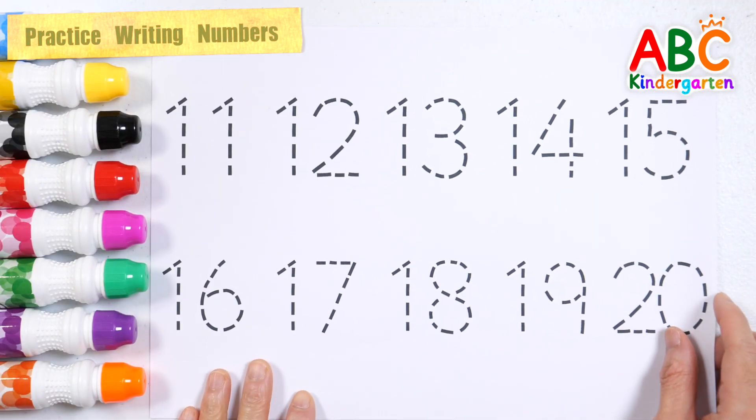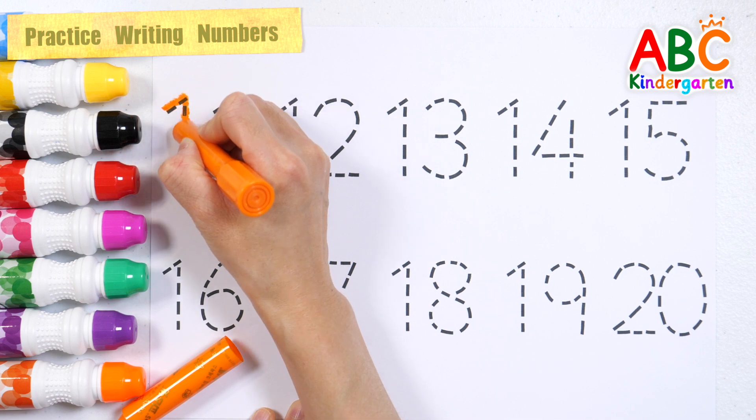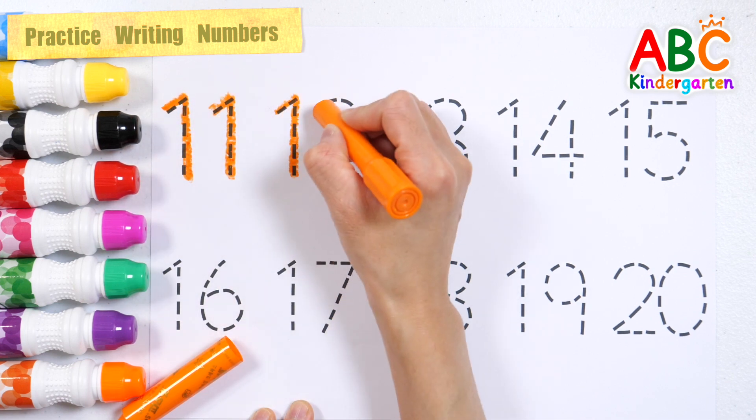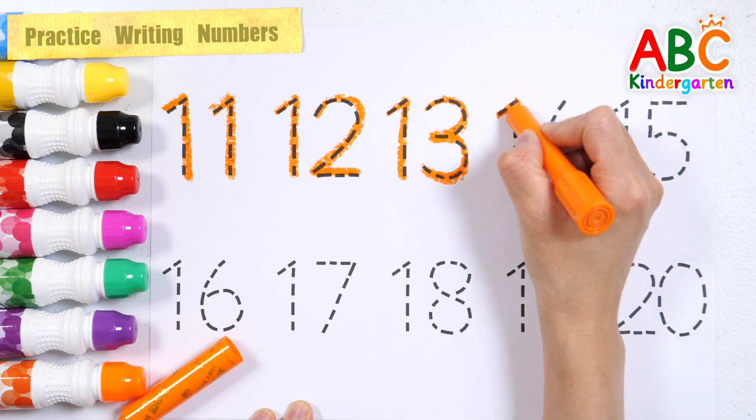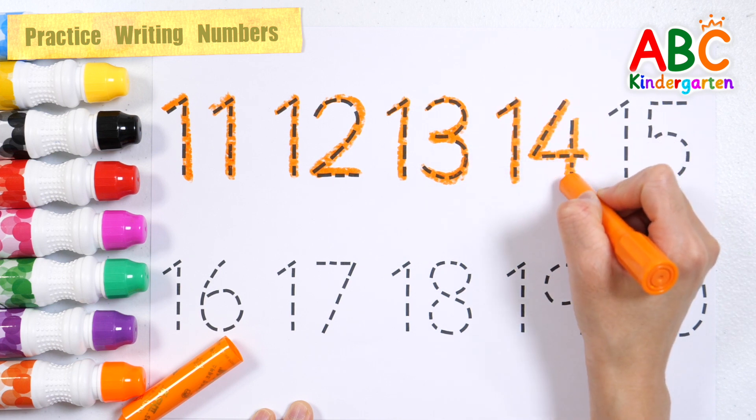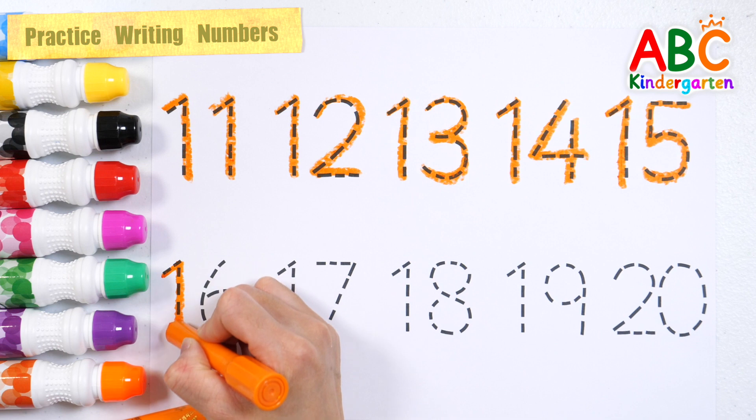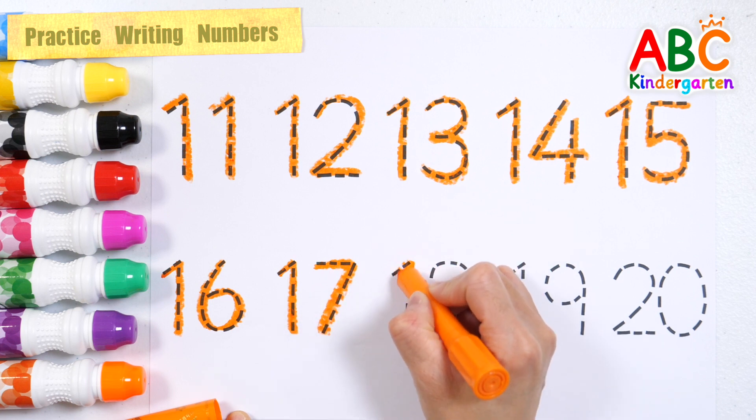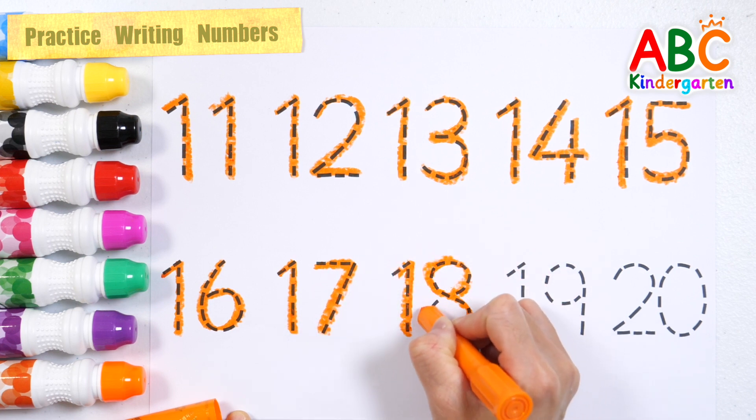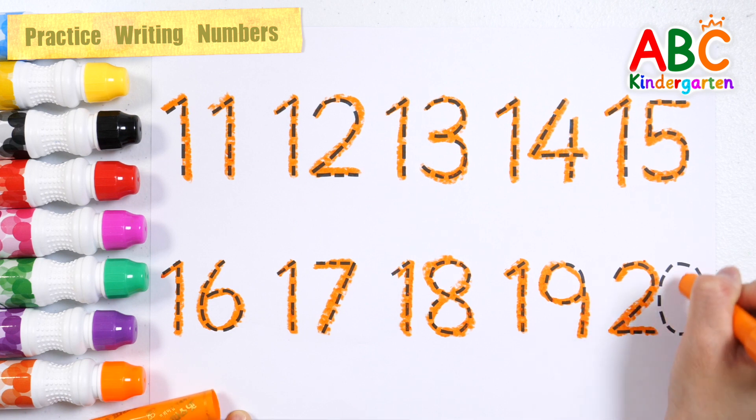Shall we write and read the numbers 11 to 20 with orange crayon? 11, 12, 13, 14, 15, 16, 17, 18, 19, 20. Good job!